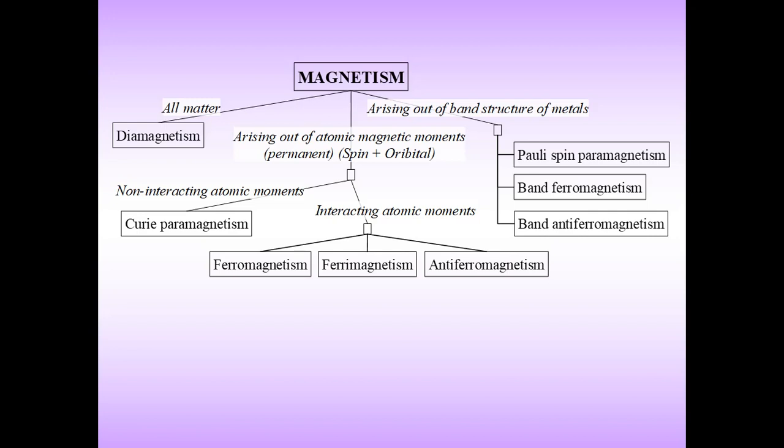Ferromagnetism is due to interacting atomic moments. There are three different types: the first one is ferromagnetism, the second is ferrimagnetism, and the third one is anti-ferromagnetism. Today we will understand all three of these.